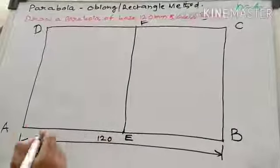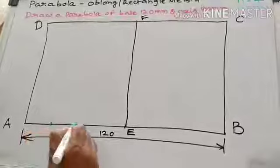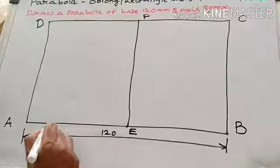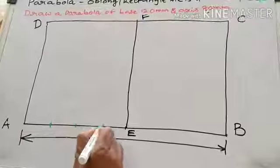So, here AE I am dividing into 4 equal divisions. 1, 2, 3, 4.